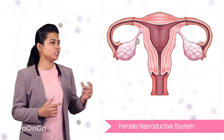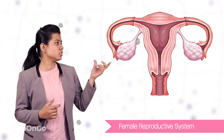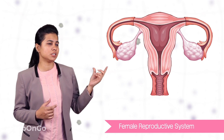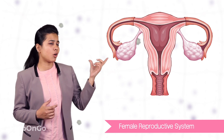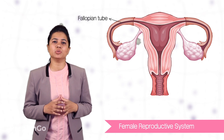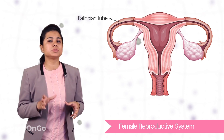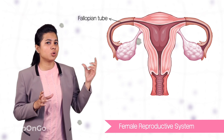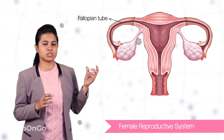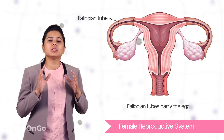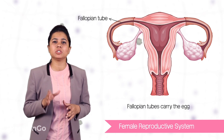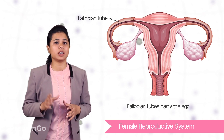Just above these ovaries is the tubular structure which you can see here, called as oviduct or the fallopian tubes. These tubes connect to the ovaries through these funnel-like structures. The main function of the fallopian tube is to carry the egg.